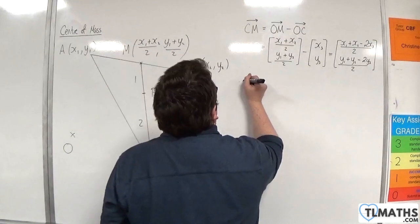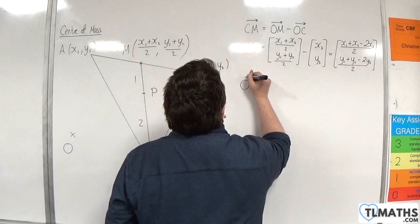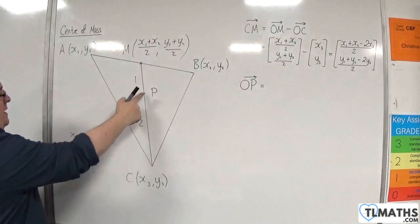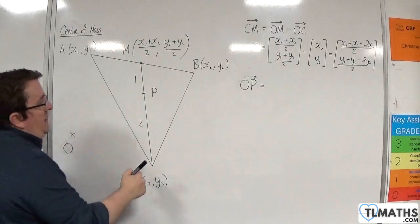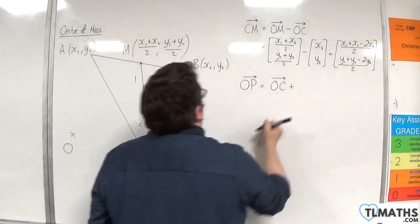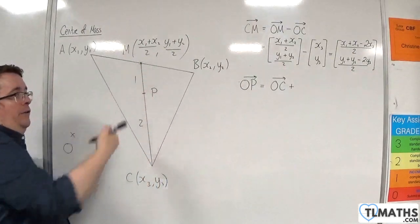So, I want to get from O to my centre of mass P. Now, to get there, I'm going to go from O to C. And then two-thirds of the way along CM.